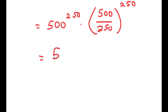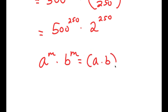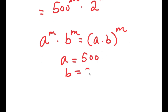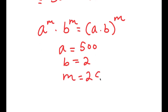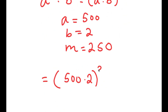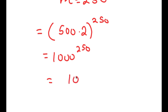This equals 500 to the power of 250 times 2 to the power of 250. Using the rule that a to the power of m times b to the power of m equals a times b to the power of m, where a is 500, b is 2, and m is 250, I get 500 times 2 to the power of 250, which equals 1,000 to the power of 250. And this is the same thing as 10 to the power of 750.